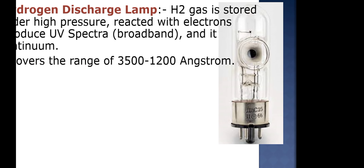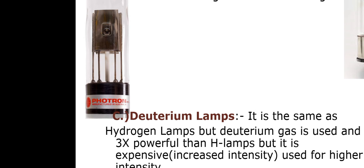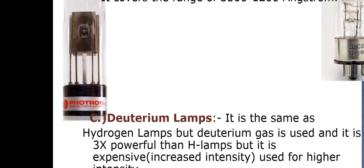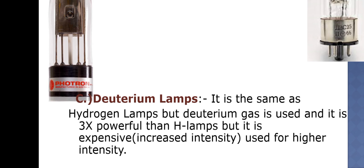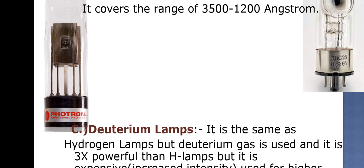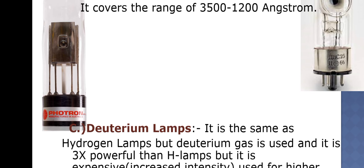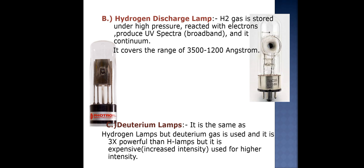The deuterium lamp is similar in type to the hydrogen lamp, but deuterium gas is used instead. It is 3 times more powerful than the hydrogen lamp and is also more expensive. It produces increased intensity of UV radiation and is used for higher radiation studies.